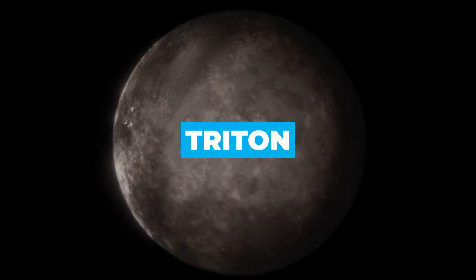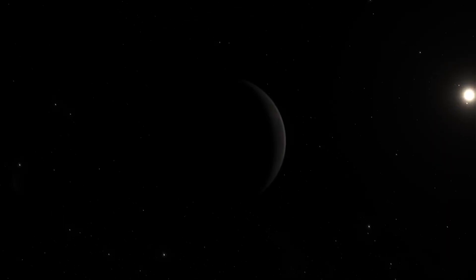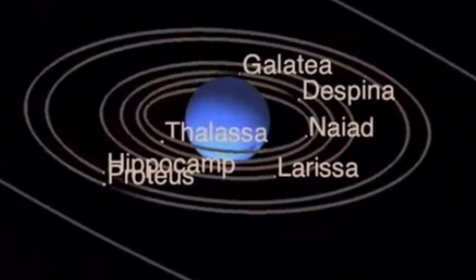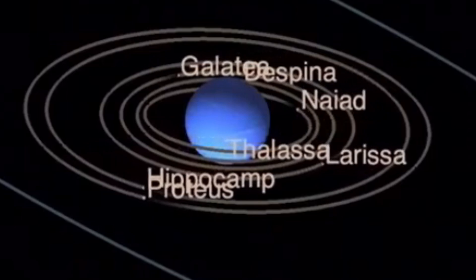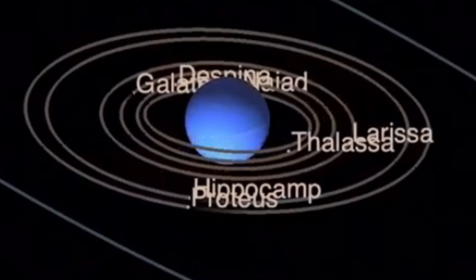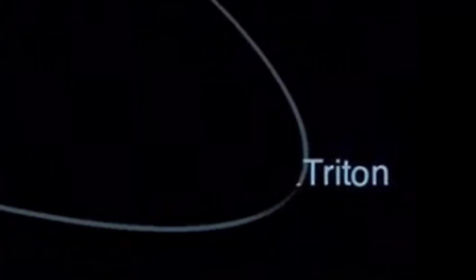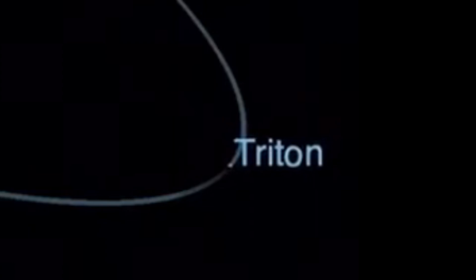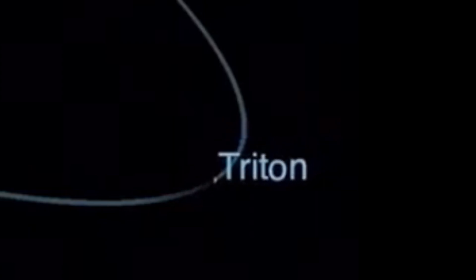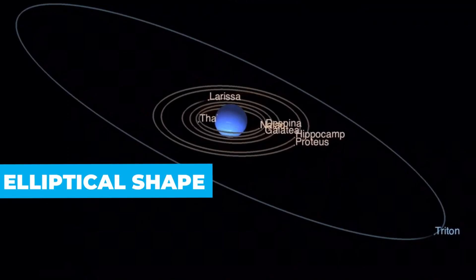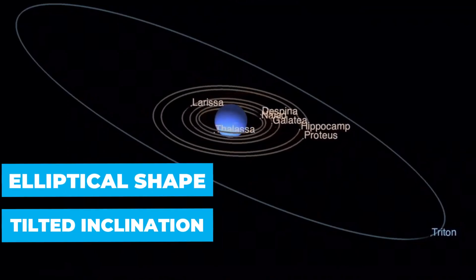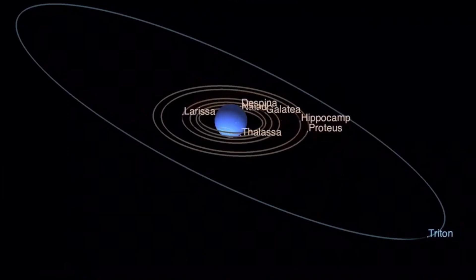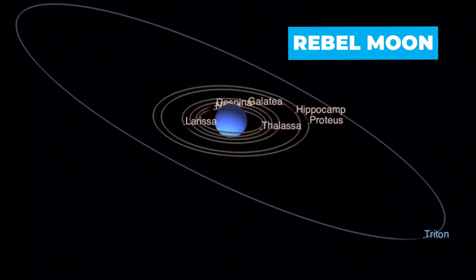A celestial body cloaked in darkness and holds secrets that defy our understanding. While most moons in the solar system orbit closer in the same direction as their parent planet, Triton, unlike most large moons in the solar system, travels in the opposite direction. This unusual path, along with its elliptical shape and tilted inclination, challenges space norms, making it a rebel moon among its companions.